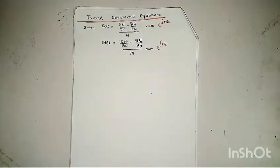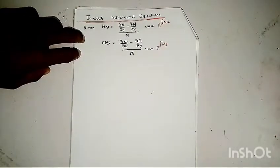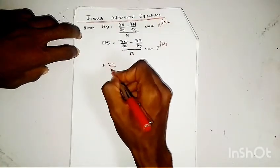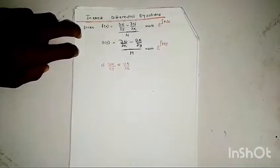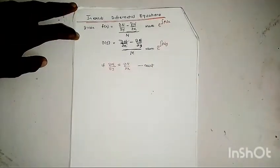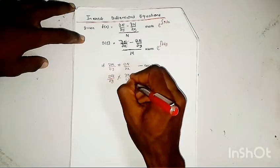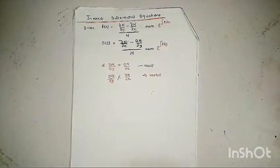So what am I trying to say? On our last video, we talked about testing for exactness. We said if ∂M/∂y is equal to ∂N/∂x, we said the equation is exact. Now in this case where ∂M/∂y is not equal to ∂N/∂x, it is inexact. So in case we come across such a scenario, how are we going to solve the question?